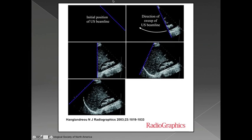So how does the ultrasound machine actually take all of these beams and echoes and turn them into an image? Essentially what the ultrasound machine does is it scans across the field of view with numerous different ultrasound beams and takes the echogenicity pattern, or the reflection pattern from those, and stitches them together into one cohesive image over the field of view.